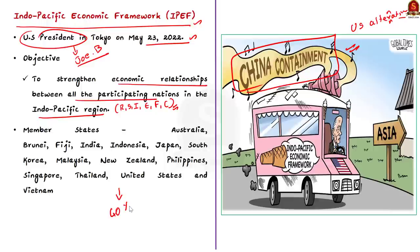The member states are: Australia, Brunei, Fiji, India, Indonesia, Japan, South Korea, Malaysia, New Zealand, Philippines, Singapore, Thailand, the United States, and Vietnam. These are the basic facts about the Indo-Pacific Economic Framework.